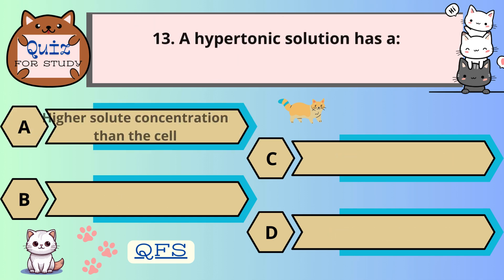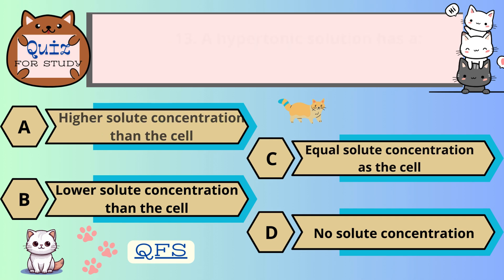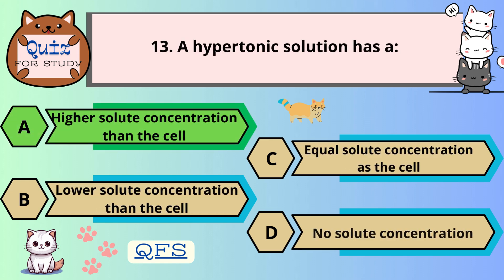Number 13. A hypertonic solution has — the correct answer is A. Higher solute concentration than the cell.